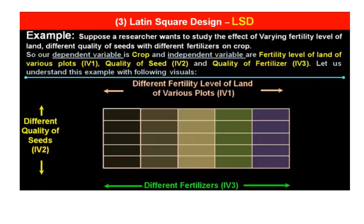Let us understand it with the help of an example. Suppose a researcher wants to study the effect of varying fertility levels of land, different quality of seeds, and different fertilizers. The dependent variable is crop, and the independent variables are: IV-1 — fertility level of land of various plots, IV-2 — quality of seed, and IV-3 — quality of fertilizer. So we have three independent variables and the dependent variable is crop.